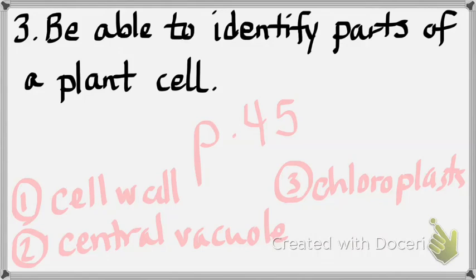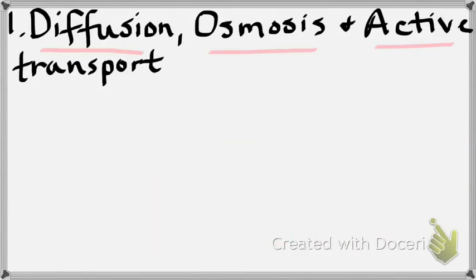We're going to the back of the sheet now. Today in lecture we covered diffusion, osmosis, and active transport. Tell me which one I'm talking about: the diffusion of water through a semi-permeable membrane — osmosis. The movement of particles from high concentration to lower concentration — diffusion. The movement of particles from low concentration to high concentration using energy — active transport.